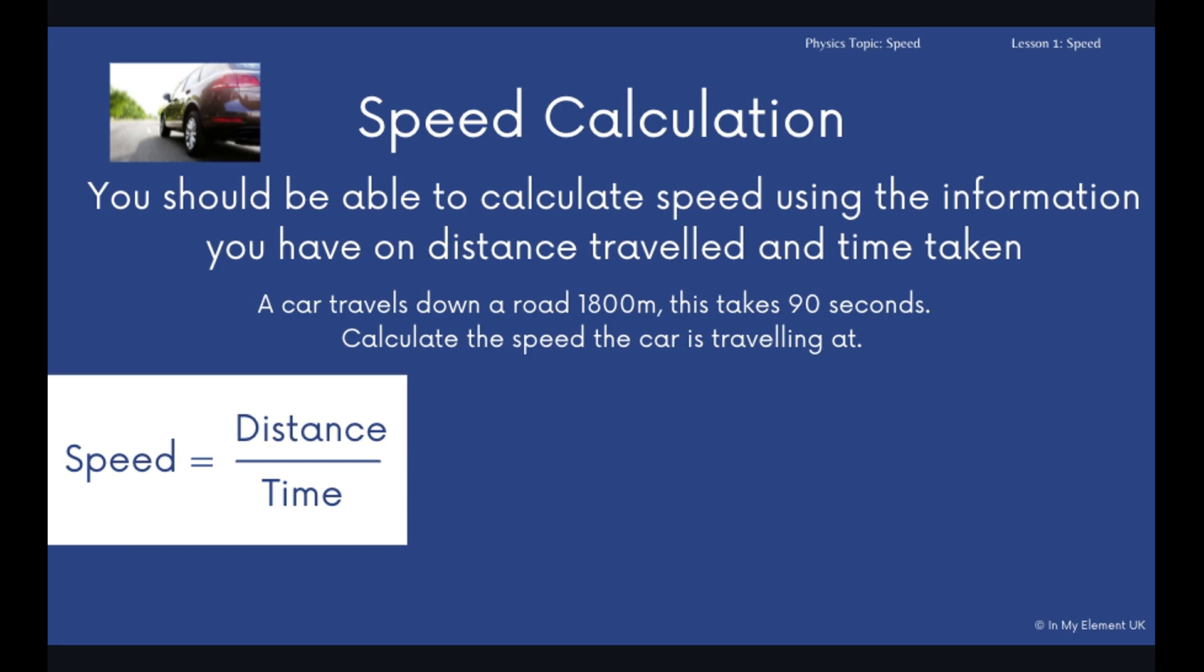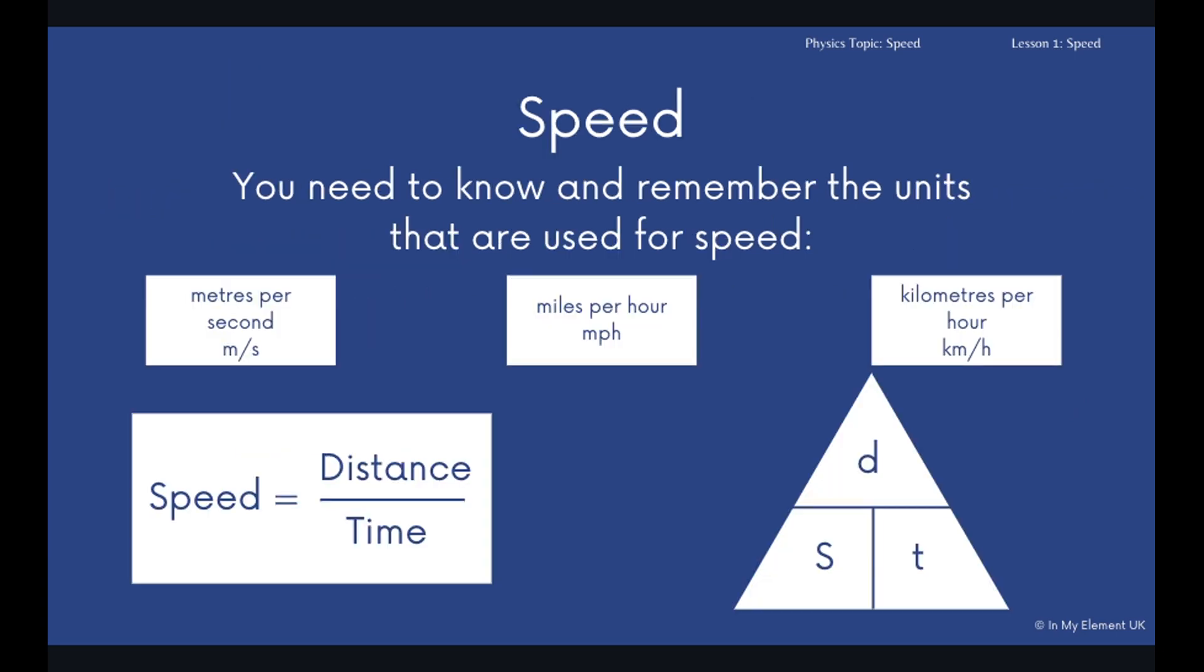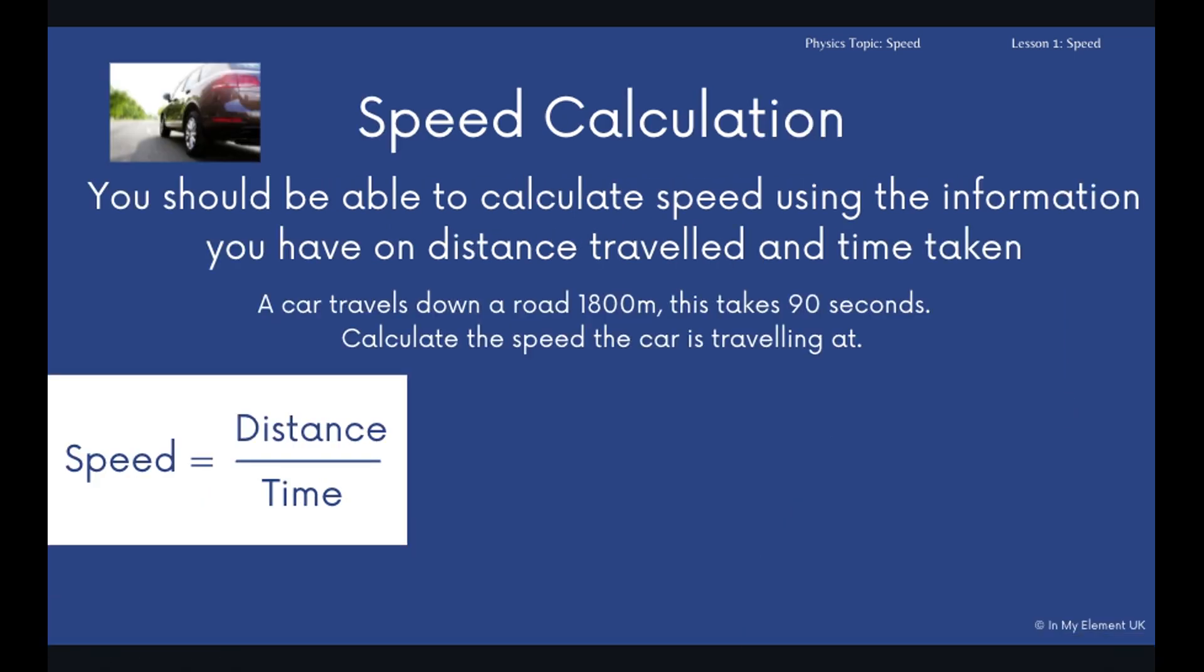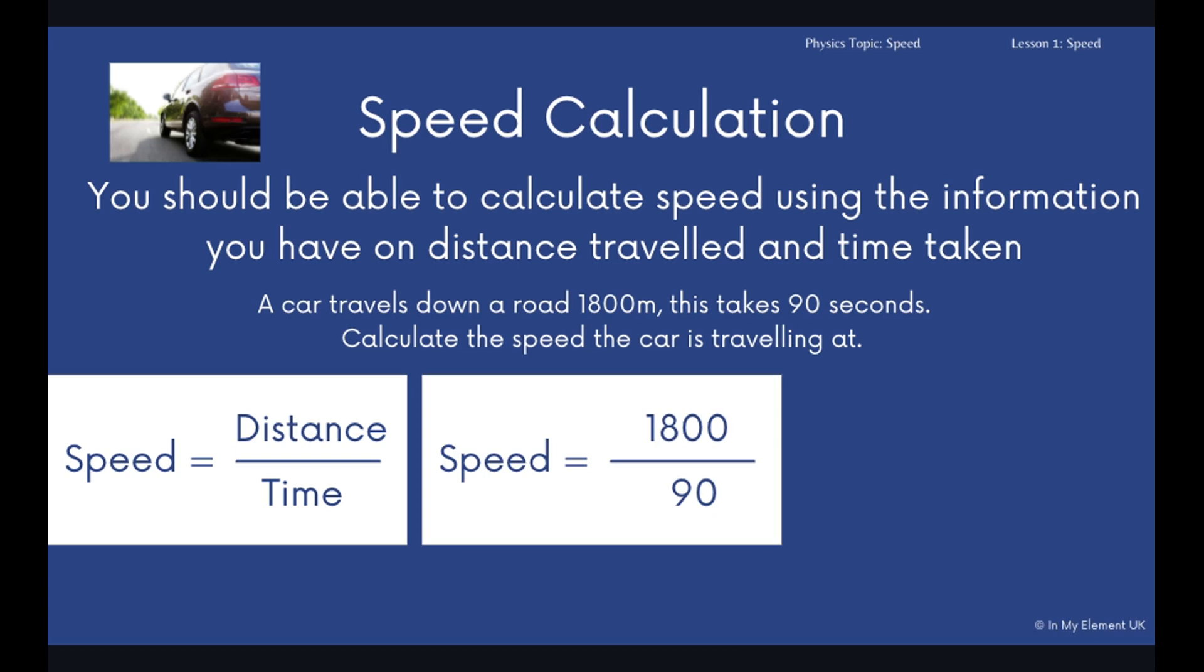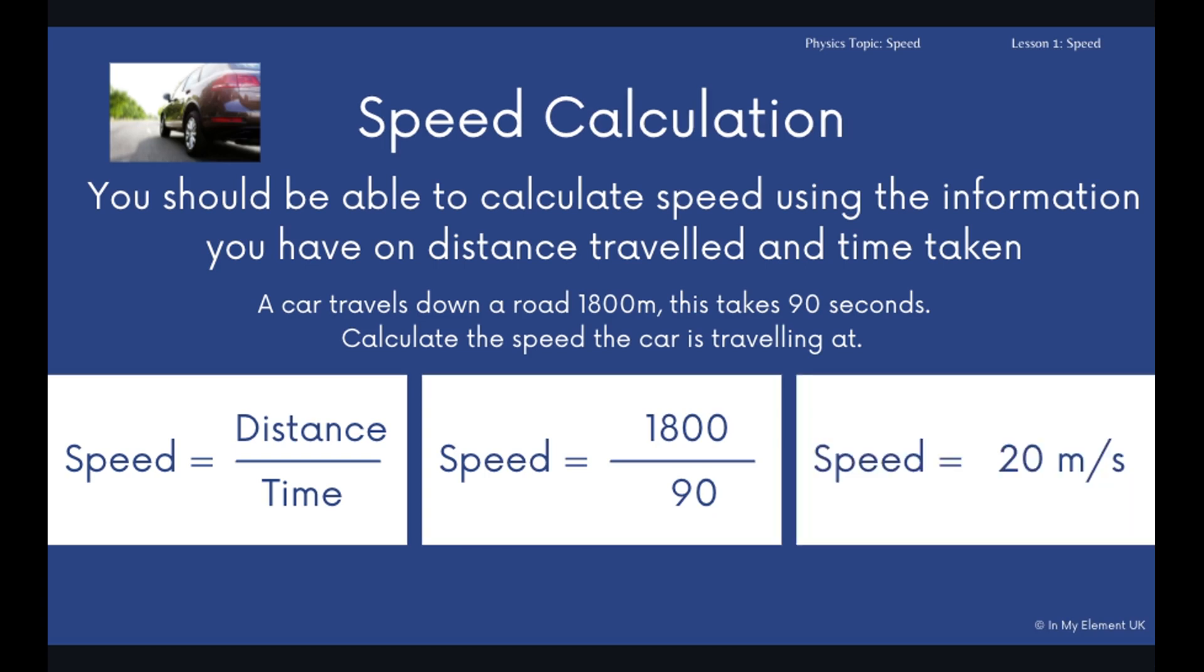In our formula triangle, we just pop back to here. In this formula triangle we've got D, S, T. Now the S being the speed, this means it's distance divided by time. You substitute in for distance 1800 and for time 90. That will give you the answer of 20 meters per second. So the car has traveled 20 meters in one second.